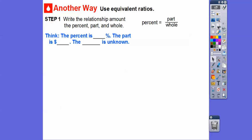Here's another way we can use equivalent ratios. We'll use this a couple of times. Write the relationship among the percent, part, and whole. Remember the percent equals part over whole. So the percent is 20%, so we're going to put 20 below the percent.